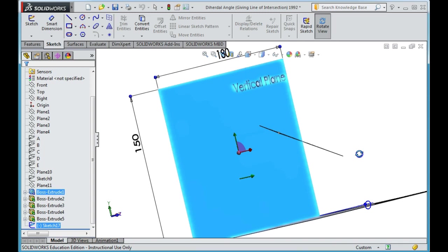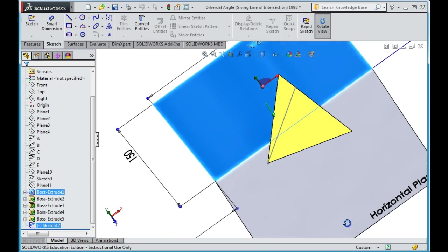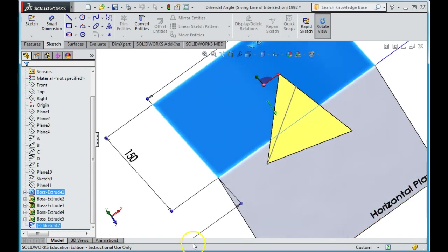Now as we've learned before with orthographic projection, if we have an edge view of a surface, if we take an auxiliary on from that edge view, that auxiliary will give us the true shape of the surface. So we're just going to go here.